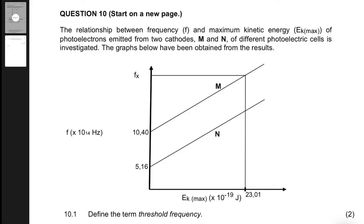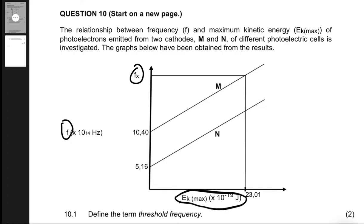The most important thing in photoelectric effect, especially when given a graph, is to find the equation of that graph. Clearly, on this graph the y-axis has f and the x-axis has EK max, so we need to derive an equation for the photoelectric effect that has EK max on the x and f on the y.